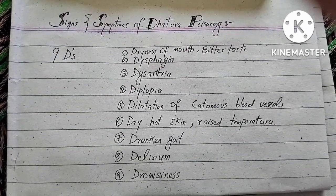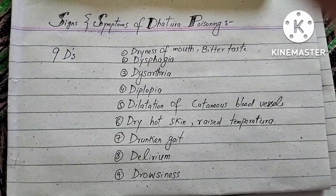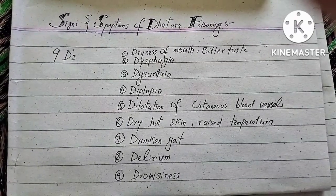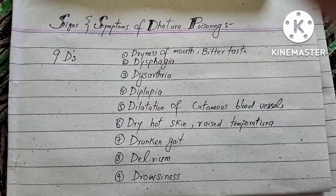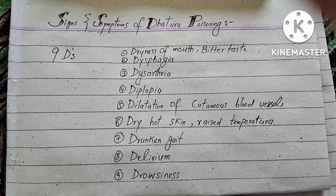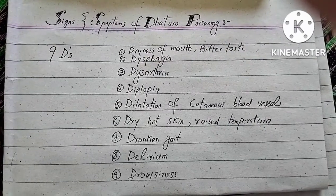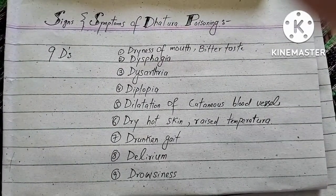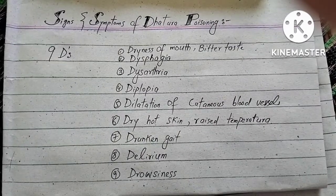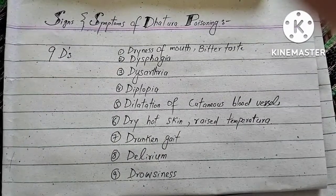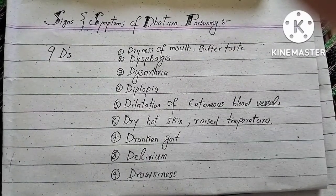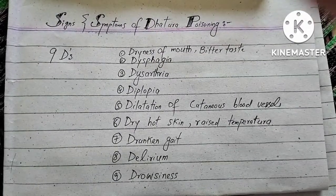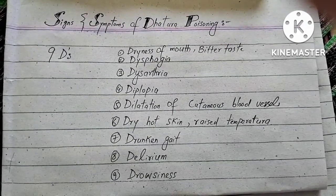Dilatation of cutaneous blood vessels, which means the blood supply to the superficial skin will be increased. It will also lead to dry, hard skin because of the increased blood supply and raised temperature. There will be drunken gait, which will mimic the gait of a person who has drunk alcohol.